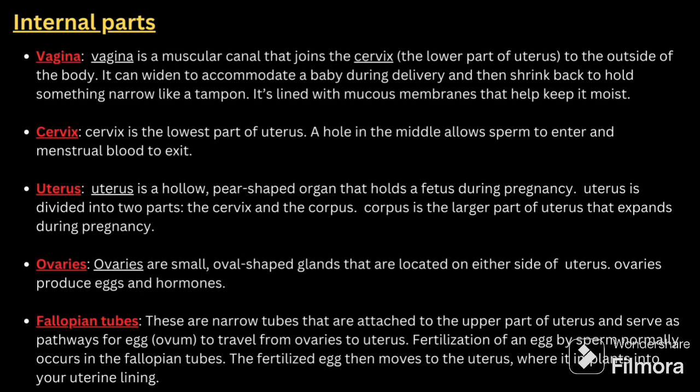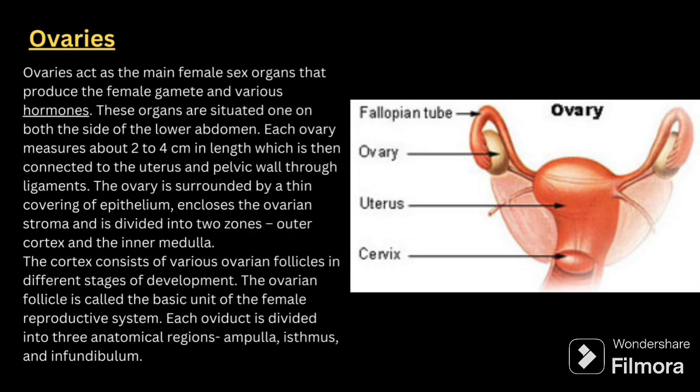Internal parts include vagina, cervix, uterus, ovaries, and fallopian tube. The vagina is a muscular canal that joins the cervix — the lower part of the uterus — to the outside of the body. It can widen to accommodate labor and baby delivery, and then shrinks back to a narrow size. It is lined with a mucous membrane that helps to keep it moist.